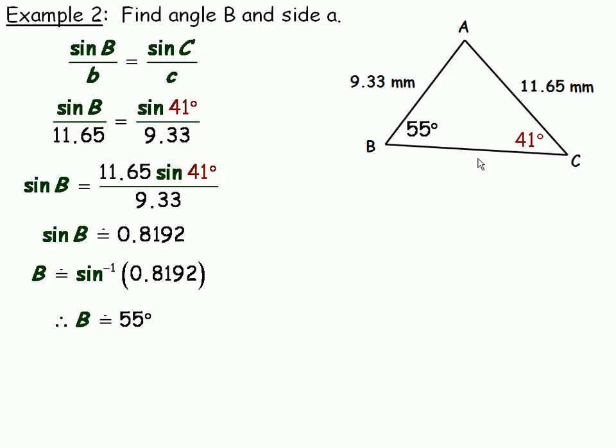In order to find side a, I need angle A. Well, I know two angles in the triangle and I know that all three add up to 180. So if I subtract 55 and 41 from 180, I can find what angle A is. Angle A works out to be about 84 degrees. We'll put 84 degrees up here. Now I can find, using the sine law, side a.